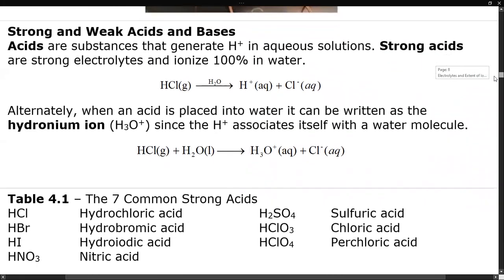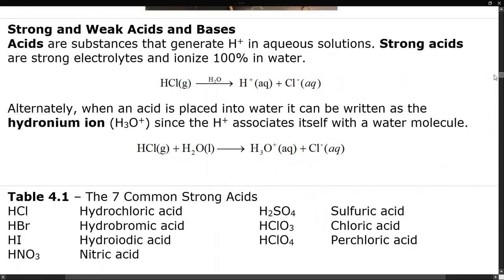Acids are substances that generate H+ in aqueous solutions. Strong acids ionize 100% in water — like HCl, which ionizes to H+ and Cl−. In more advanced chemistry, H+ doesn't truly exist alone in water, so HCl donates its hydrogen to water and you form H3O+ and Cl−; H3O+ is called the hydronium ion. You need to memorize the strong acid list: HCl (hydrochloric), HBr (hydrobromic), HI (hydroiodic), HNO3 (nitric), H2SO4 (sulfuric), HClO3 (chloric — most books include it), and HClO4 (perchloric). All of those are strong acids.